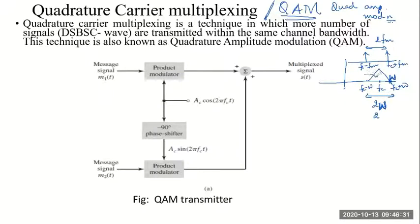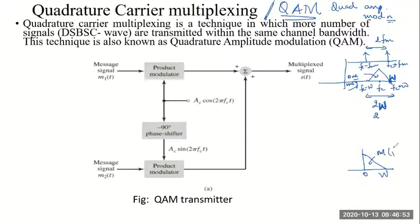In this 2W bandwidth, I can send only one message. In whatever we have studied till now, a single message can be sent within a bandwidth which is almost double that of the actual message signal. The actual message signal occupies bandwidth from 0 to W, but when we modulate, the bandwidth doubles to 2W, and in that 2W bandwidth we can send only one single message.